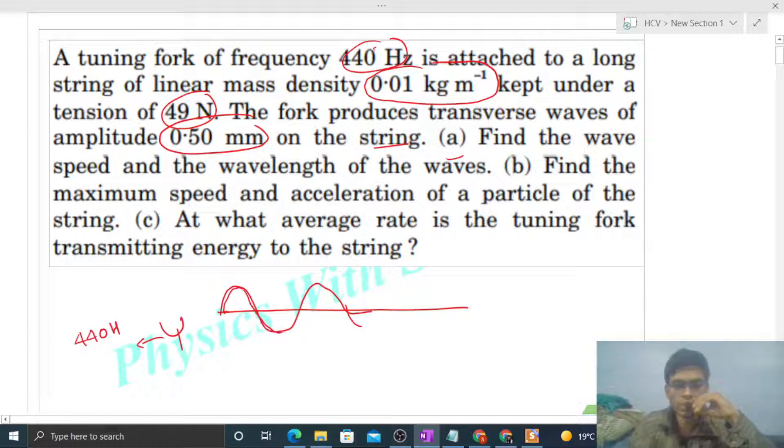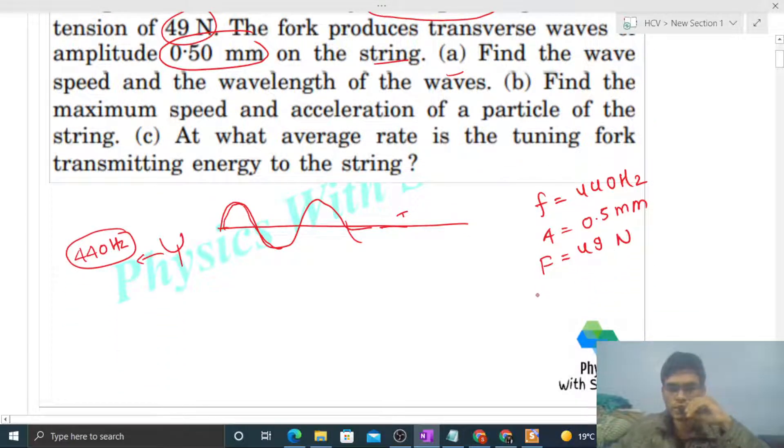So frequency is 440 Hz, amplitude is 0.5 mm. The tension force in the string is 49 N, and linear mass density is 0.01 kg/m. This data is given. We need to find out the wave speed.